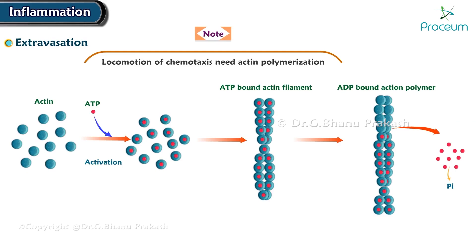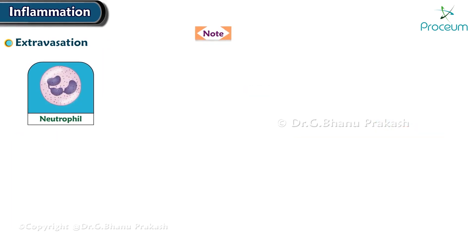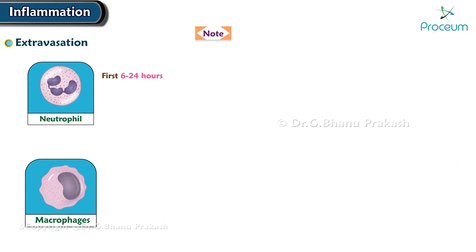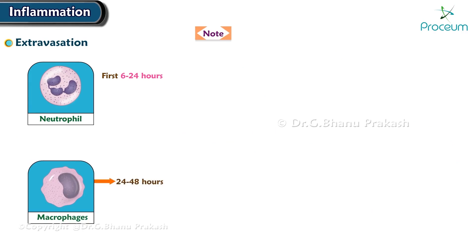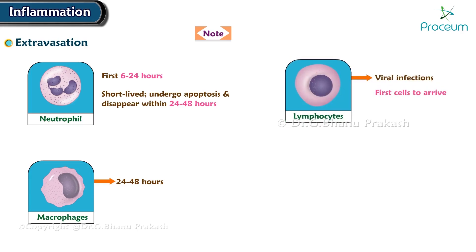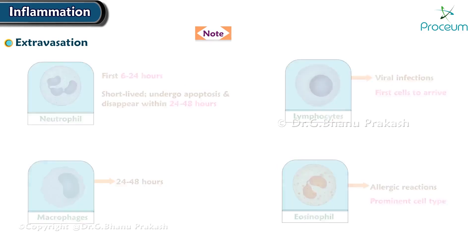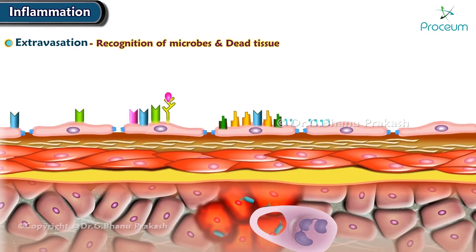In most forms of acute inflammation, neutrophils predominate in the inflammatory infiltrate during the first 6 to 24 hours and are gradually replaced by monocyte-derived macrophages over 24 to 48 hours. After entering the tissues, neutrophils are short-lived and undergo apoptosis within 24 to 48 hours. In viral infections, lymphocytes may be the first cells to arrive. In allergic reactions, eosinophils may be a prominent cell type.